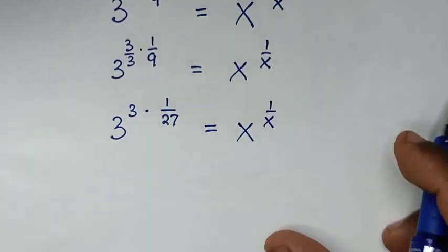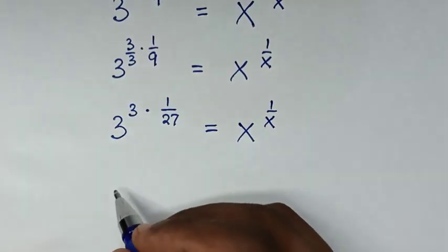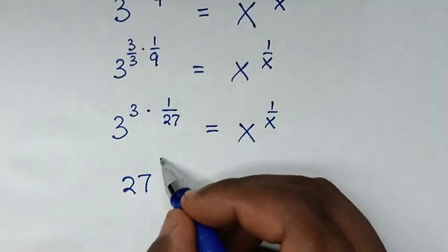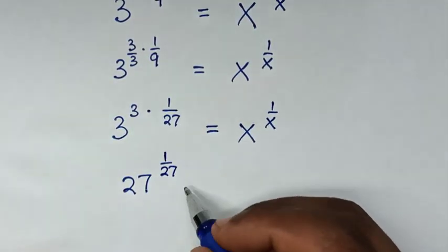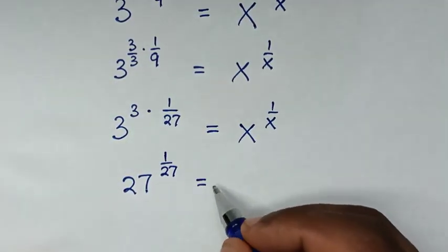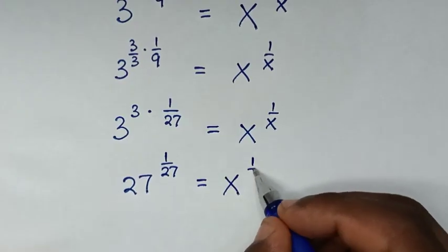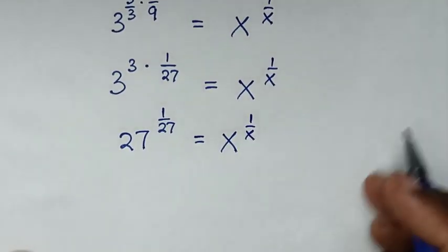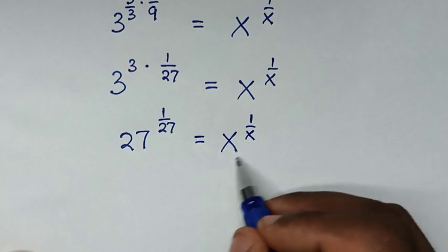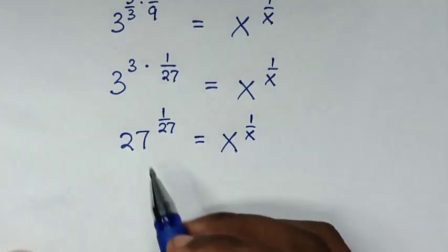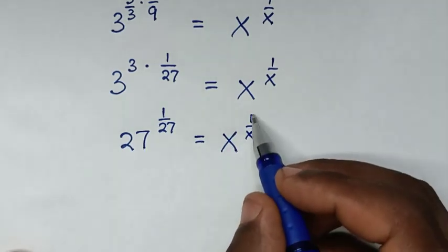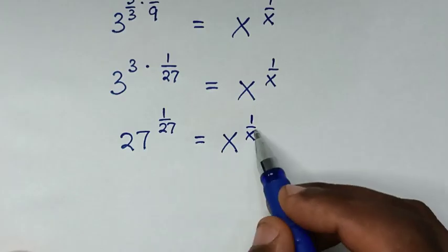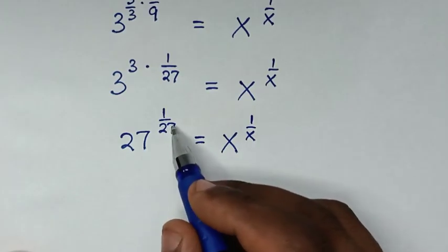In the next step, 3 to the power of 3 is 27, so we have 27 to the power of 1 over 27 is equal to x to the power of 1 over x. From here, we compare the base: x equals 27, and the power 1 over x equals 1 over 27, confirming that x is equal to 27.